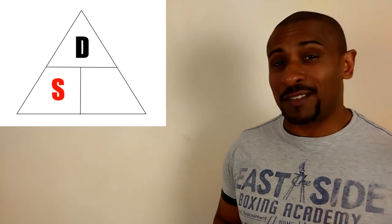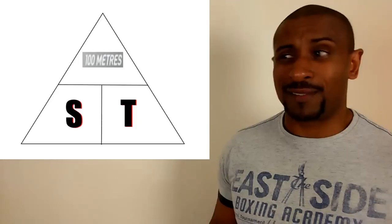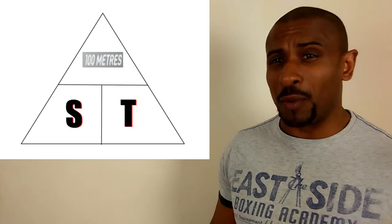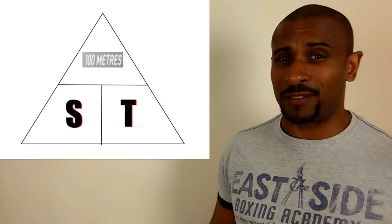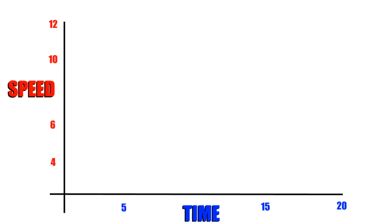Speed is distance over time, yes. But as a sprinter, the distance is set by the event. We're not competing in the equivalent of the man's speed record — there's no flying 10 to 30 Olympic events. So now you're looking at the speed you go times the time that it takes. The faster you go, the less time it takes. They're inversely proportional, but in a good way.